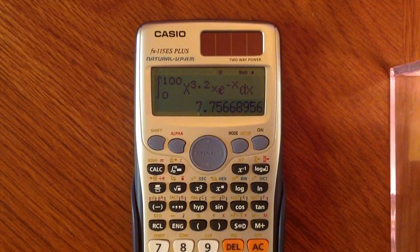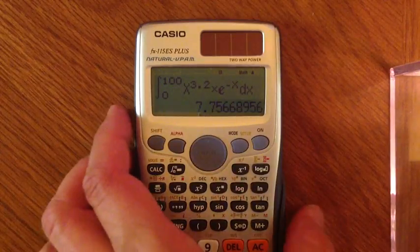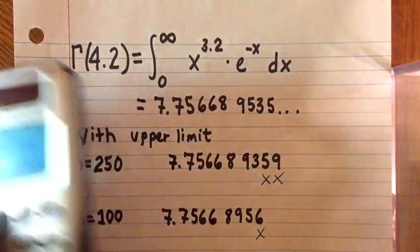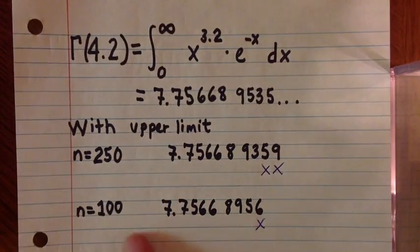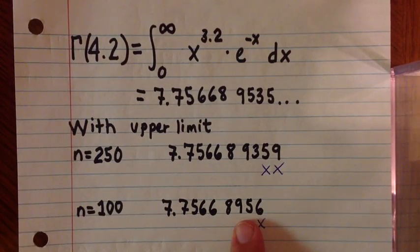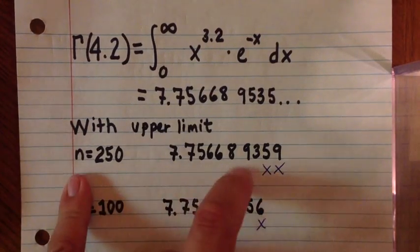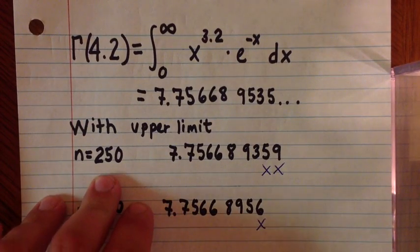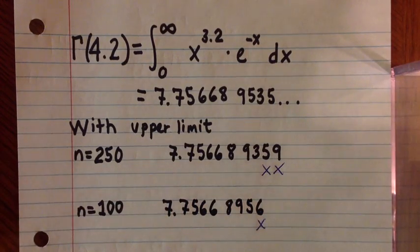What I found was that is pretty accurate, almost full accuracy as far as calculator displays go. The Casio has 10 digits, and you get an 8-digit accuracy for this, for n equal to 100. If you go up to 250, same thing. It takes maybe about 10 more seconds to calculate the integral with 250. If you set n to be about 100, you should be good to get 4 or 5 decimal places.